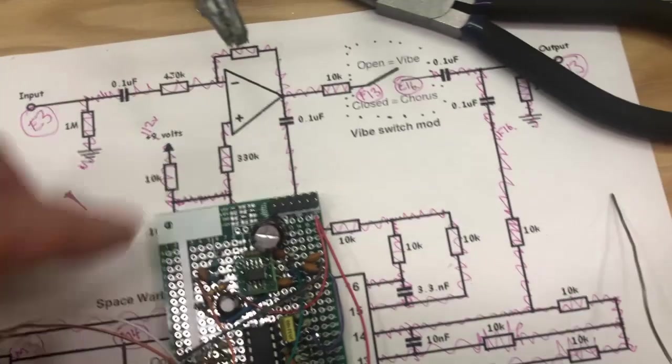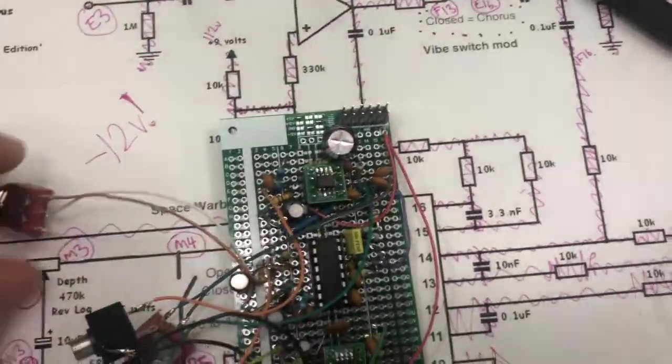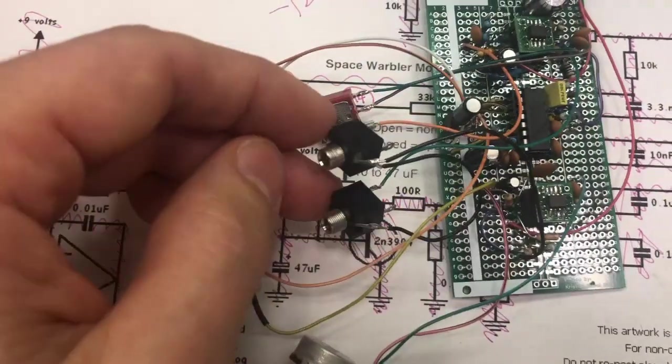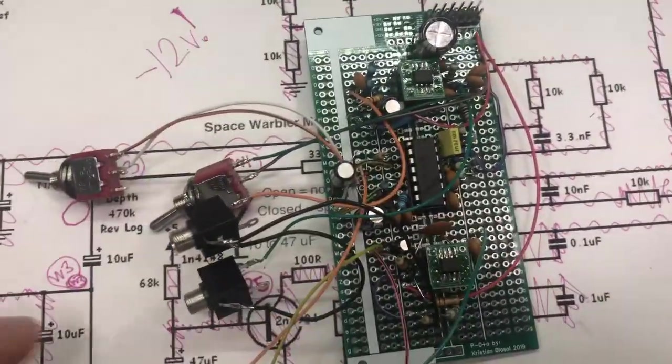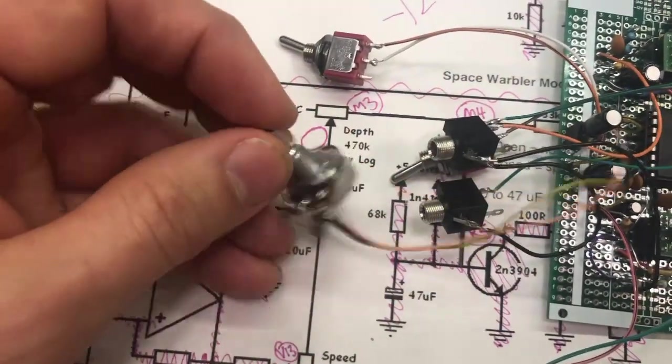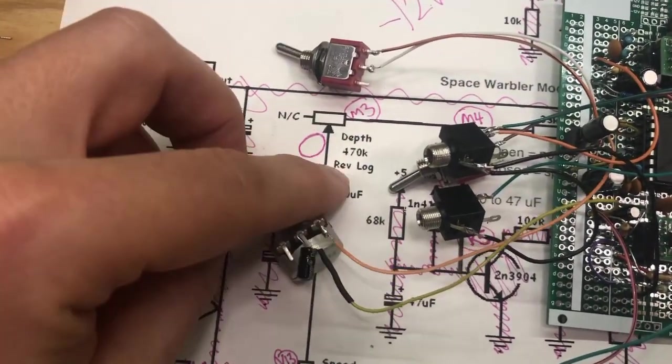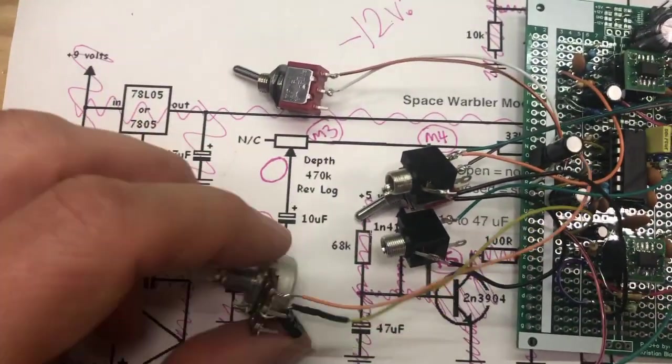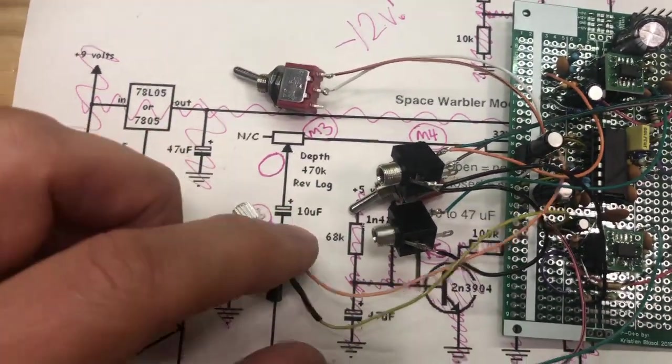We have an input and output, that's the only two jacks. Then we have switches and pots. So this is the depth, and this should be a reversed logarithmic and I didn't have that, so it's really sensitive. I could probably reverse it and add it to that pin so the logarithmic function would work.